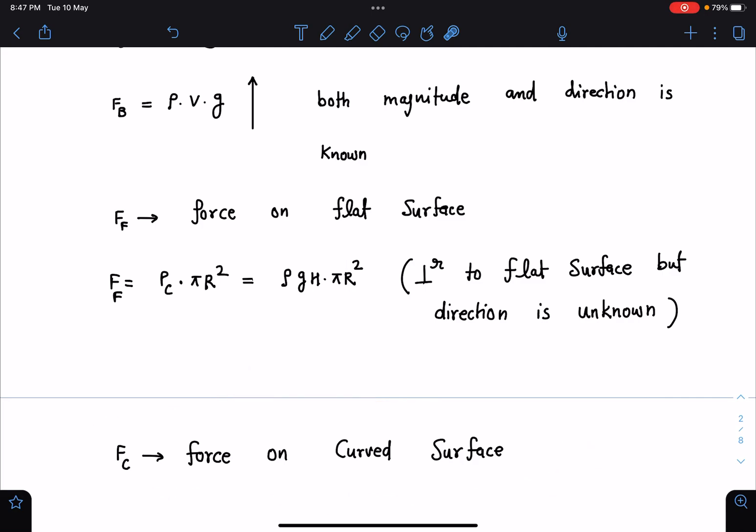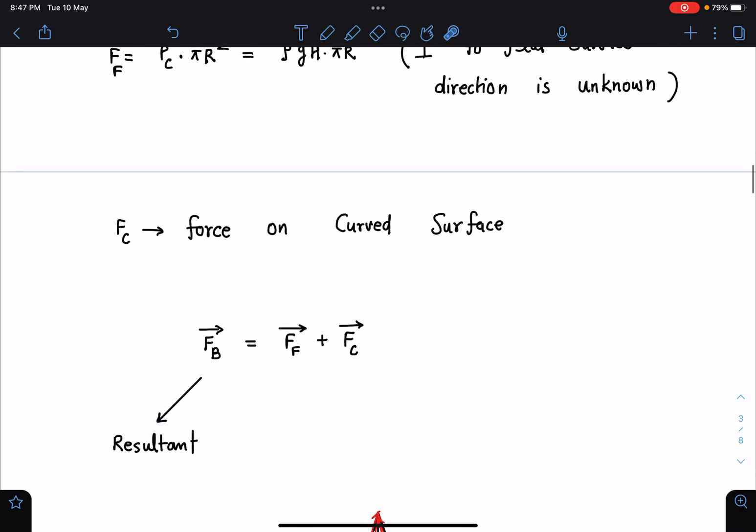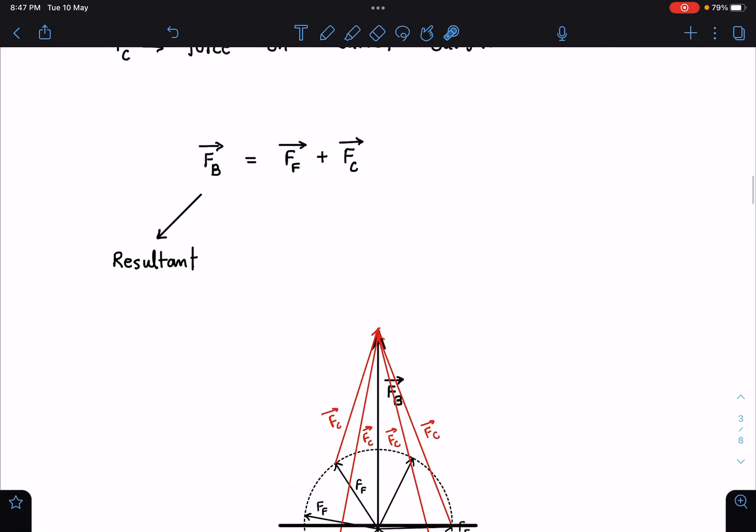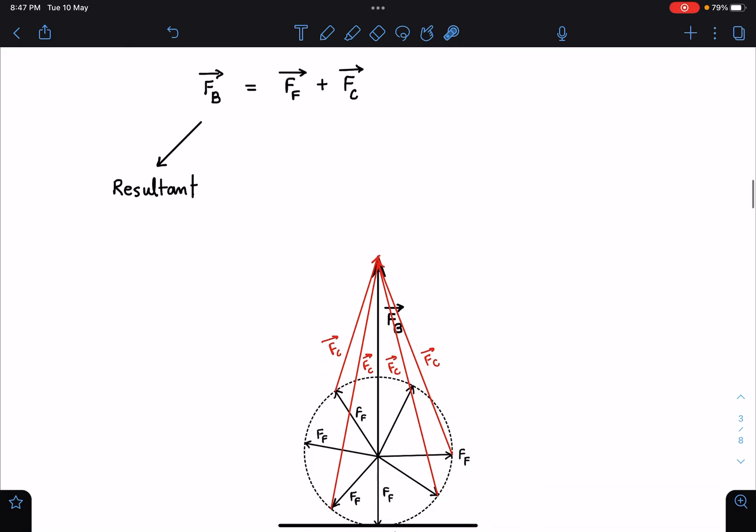After this what we can do is we can construct a vector triangle. You can see FB is the resultant of these two forces: flat surface and this. Here what I am doing is I am drawing this FB which is upward and I can choose this force on flat surface in any direction I can choose.